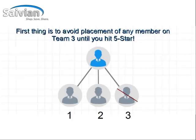The first thing you want to do is avoid placement of any new member on Team 3 until you reach the level of 5-star. You can see the red line slash through Team 3 indicating that you don't want to select it. So now you're narrowed down to two teams, Team 1 and Team 2, to get started in building your Savion business.